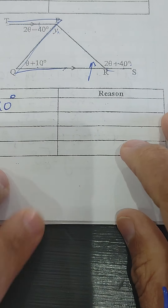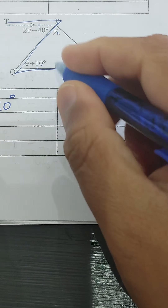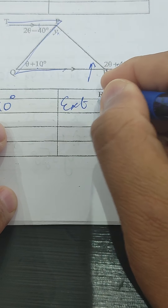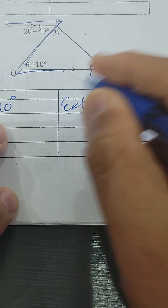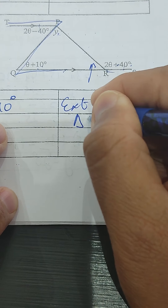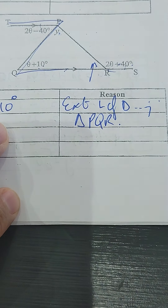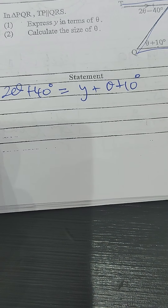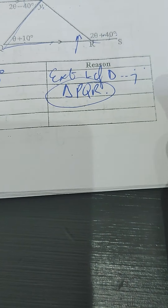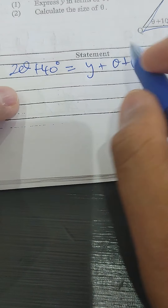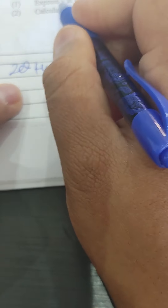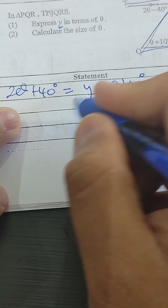This is because the exterior angle is equal to the sum of the two interior opposite angles — exterior angle of triangle PQR. Do we have to say this part of it? No, you don't. So they ask you to express y in terms of theta, so y is the subject of the formula.